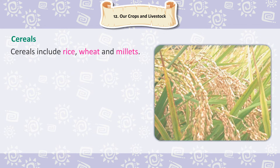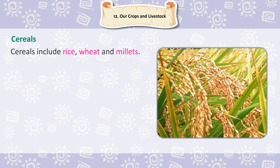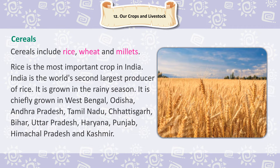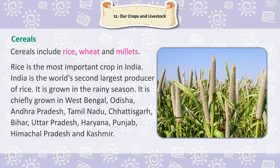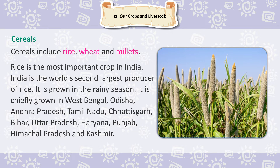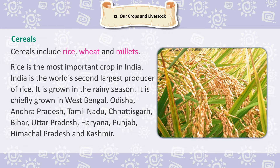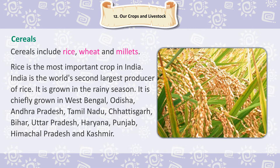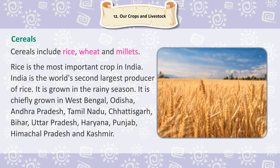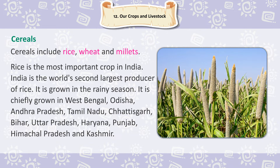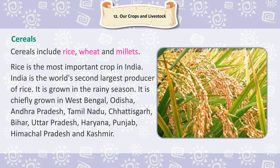Cereals include rice, wheat and millets. Rice is the most important crop in India. India is the world's second largest producer of rice. It is grown in the rainy season and is chiefly grown in West Bengal, Odisha, Andhra Pradesh, Tamil Nadu, Chhattisgarh, Bihar, Uttar Pradesh, Haryana, Punjab, Himachal Pradesh and Kashmir.